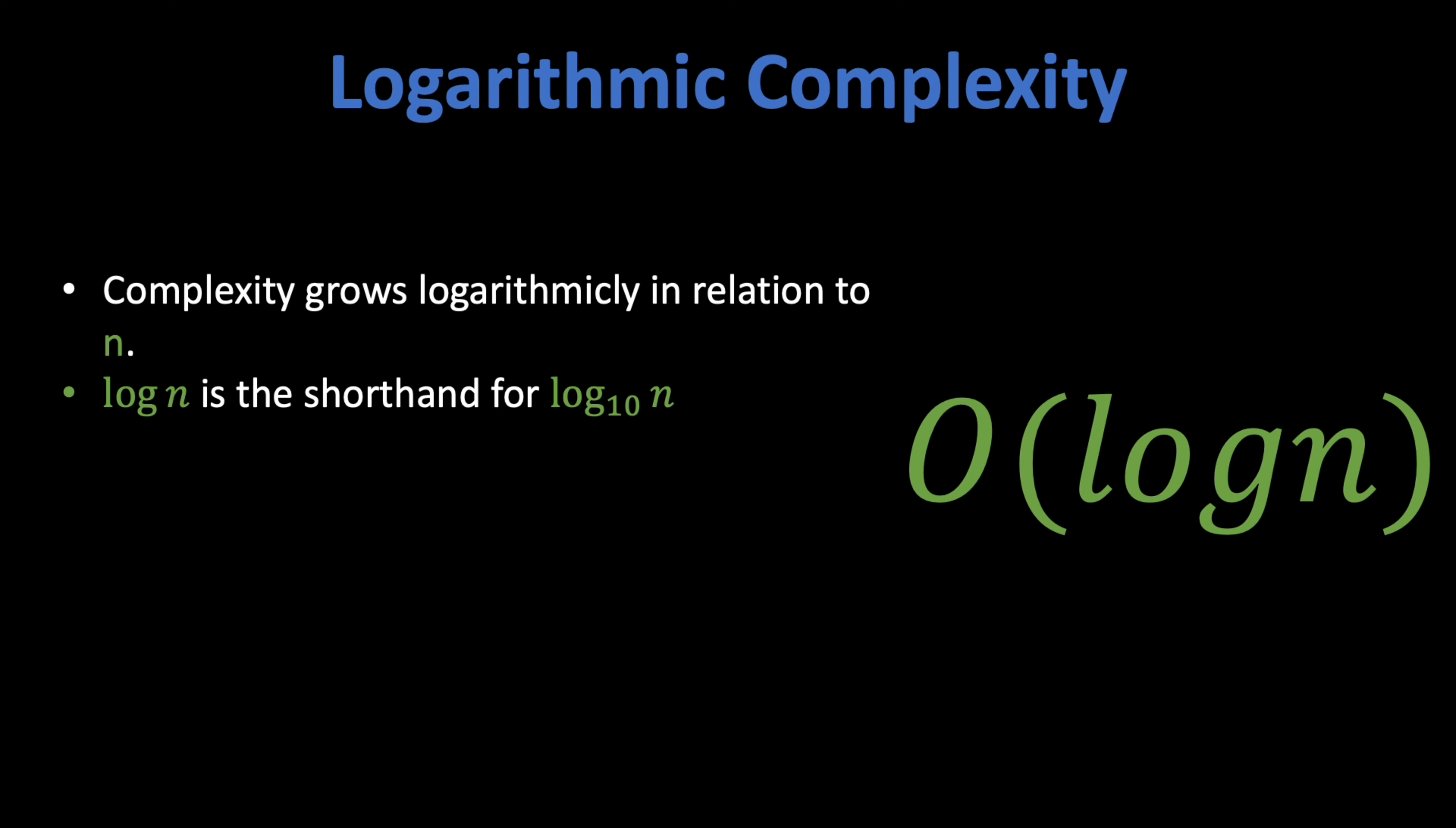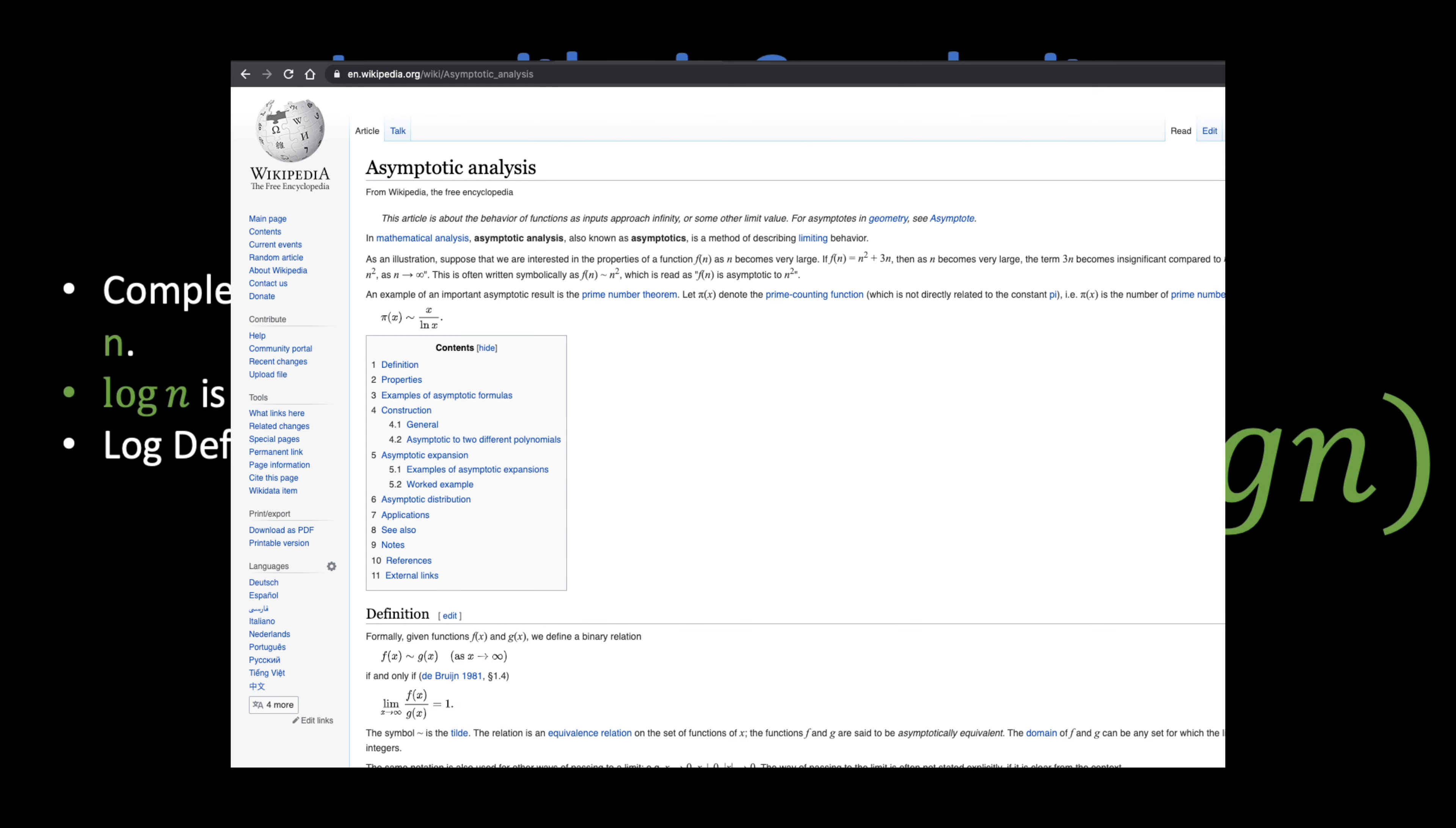Let me remind you that log n is the shorthand for log base 10 of n. And the definition of logarithm is log base a of n equals x only if a to the power of x equals n. Since big O notation is asymptotic, we always use log n regardless of the logarithm's base. The logarithm's base changes nothing but a constant multiplier. Hence, it's irrelevant to our analysis.